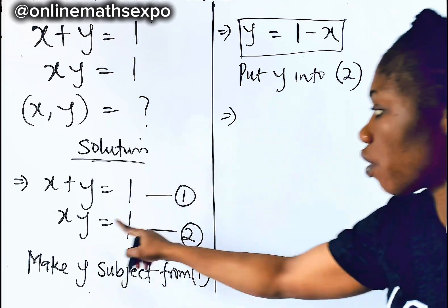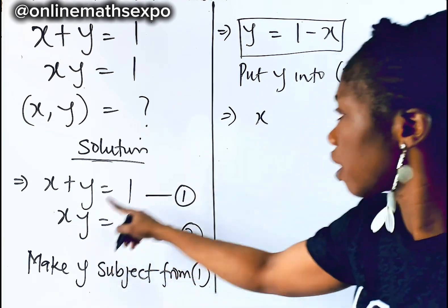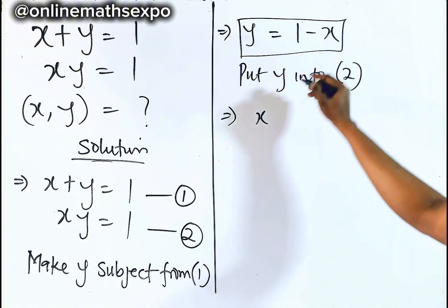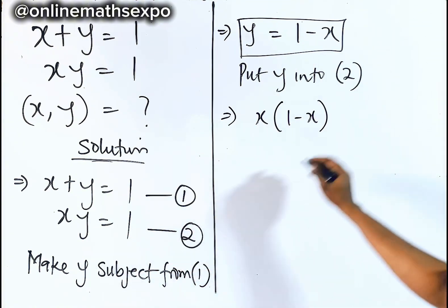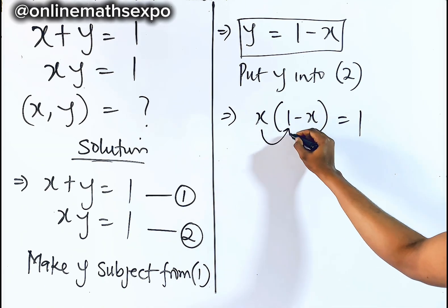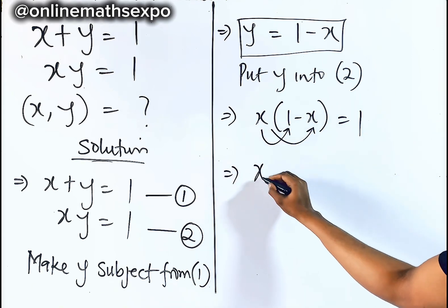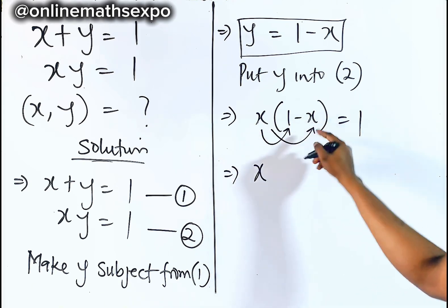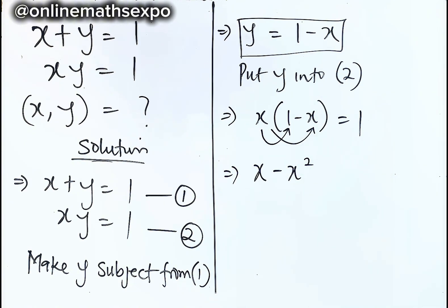We are going to put y into equation 2. So you are going to have x, and instead of writing y, you replace it with 1 minus x, and it's equal to 1. Now distribute x into the brackets: x times 1 gives us x, and x times negative x gives us negative x squared, and everything is equal to 1.